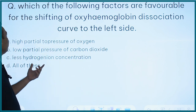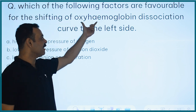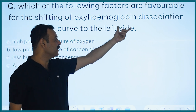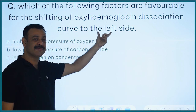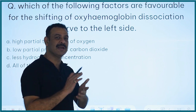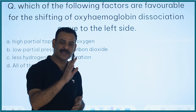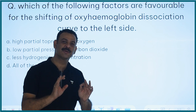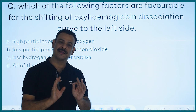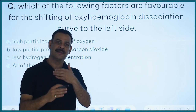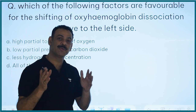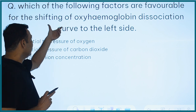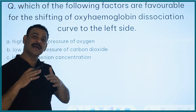First of all, you have to look at this question: which of the following factors are favorable for the shifting of the oxyhemoglobin dissociation curve to the left side? Remember that you have studied the gases section, and the oxygen dissociation curve is very important. If you look at previous year questions, this particular part comes up repeatedly, asked in several different ways.